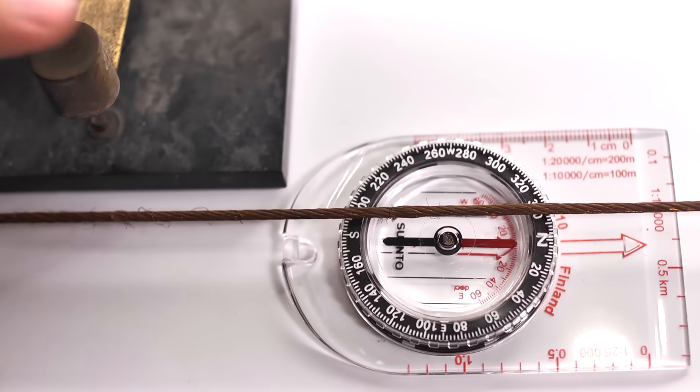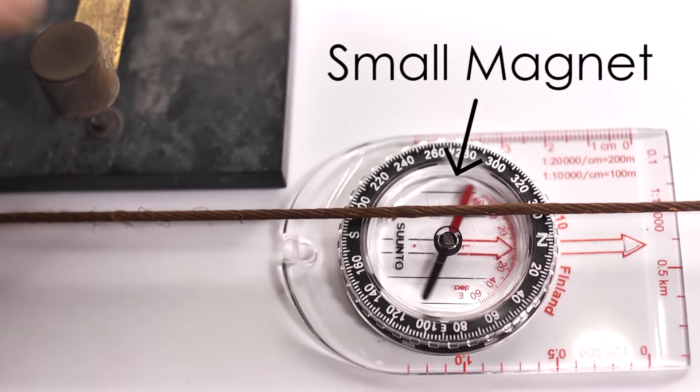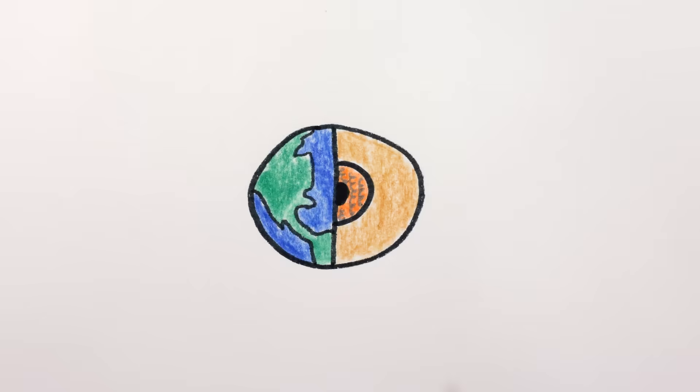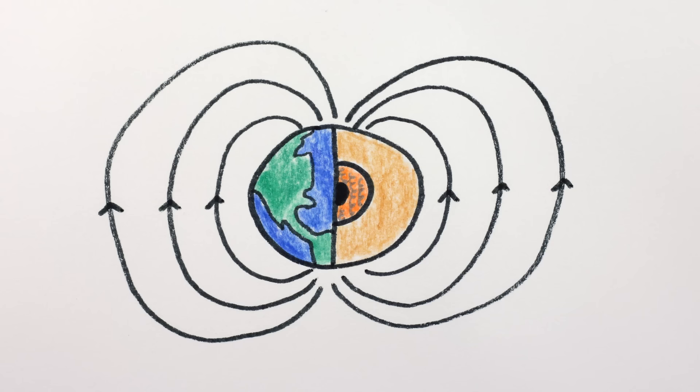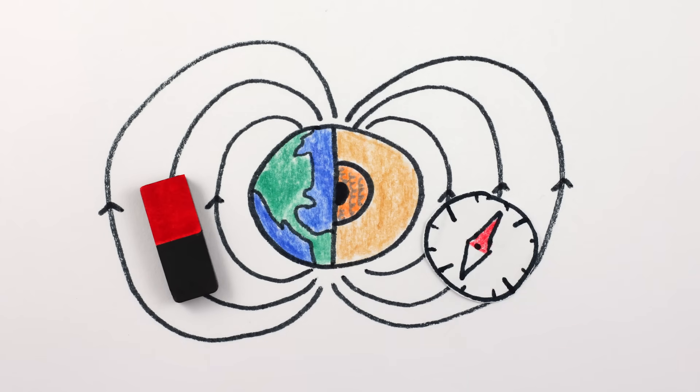a magnetic field is just what an electric field becomes when an electrically charged object starts moving. That makes sense for explaining why a current of electrons flowing through a wire causes this compass needle to move, or how currents in the Earth's outer core generate the geomagnetic field. But a bar magnet or the compass needle itself are just pieces of metal without any electrical current running through them. Or are they?